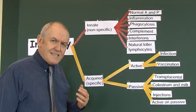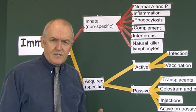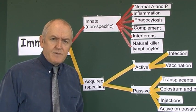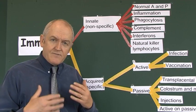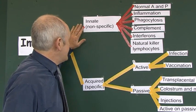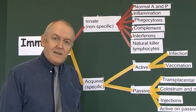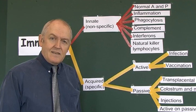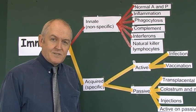With innate immunity, we don't have to be exposed to an infection in order to be immune to it. You're already immune — you don't have to learn how to be immune. It's already there, acting against a wide variety of potentially infecting pathogenic microorganisms.